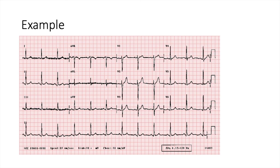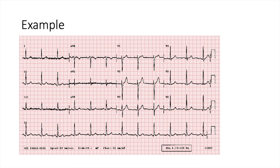Then we look at the ST segment. Is the ST at any point higher than the PR interval? No, I can't see any areas where it's higher than it should be. The final thing is the T-wave. Is it present? Yes. Is it upright in all leads except possibly V1 and AVR? In all leads it's positive. It's negative in AVR, but that's normal. It's positive in V1, which is also fine. In summary, this is a sinus rhythm ECG — and that's everything you really need to know for interpreting ECGs.